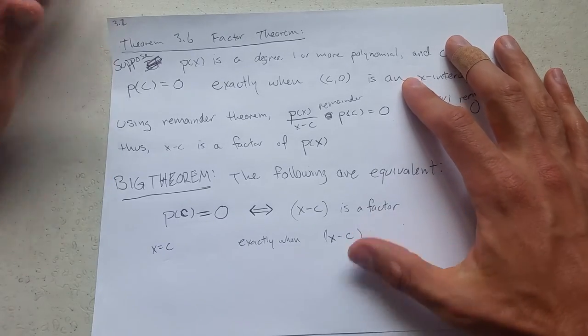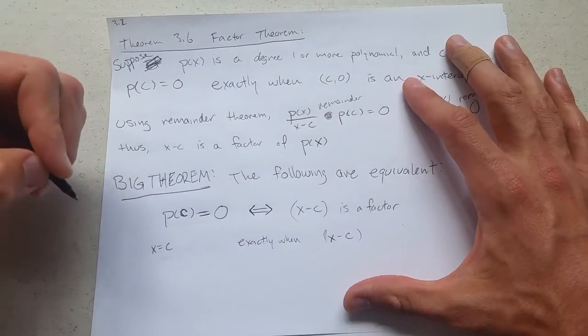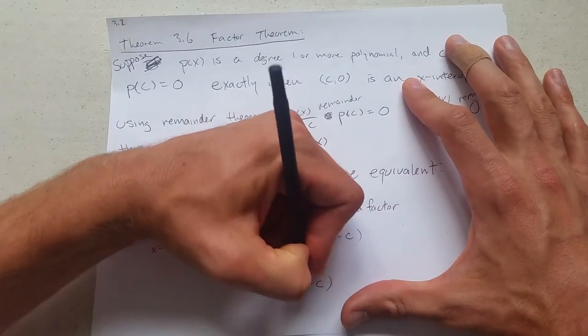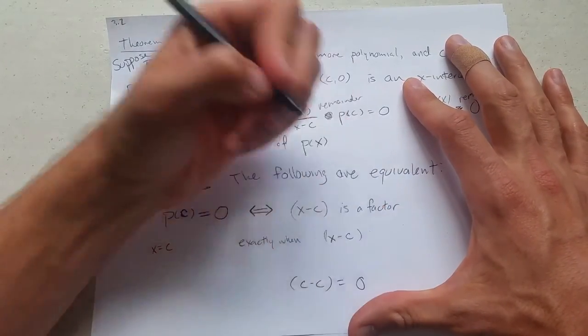That sign, it looks like the sign changes. The way I like to think about it, if you plug in c where you see x, you'll get c minus c, subtract that, which is zero.